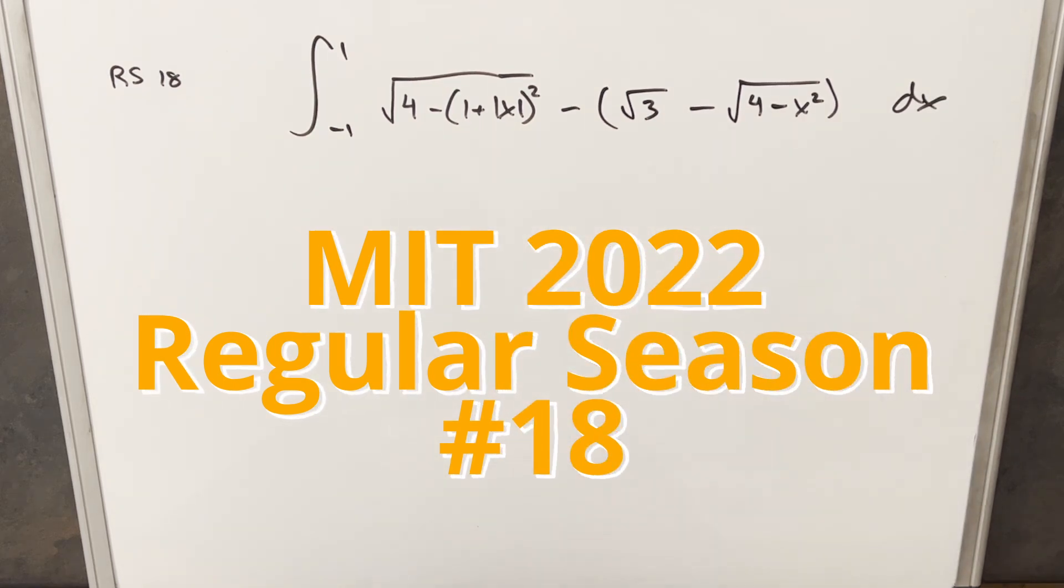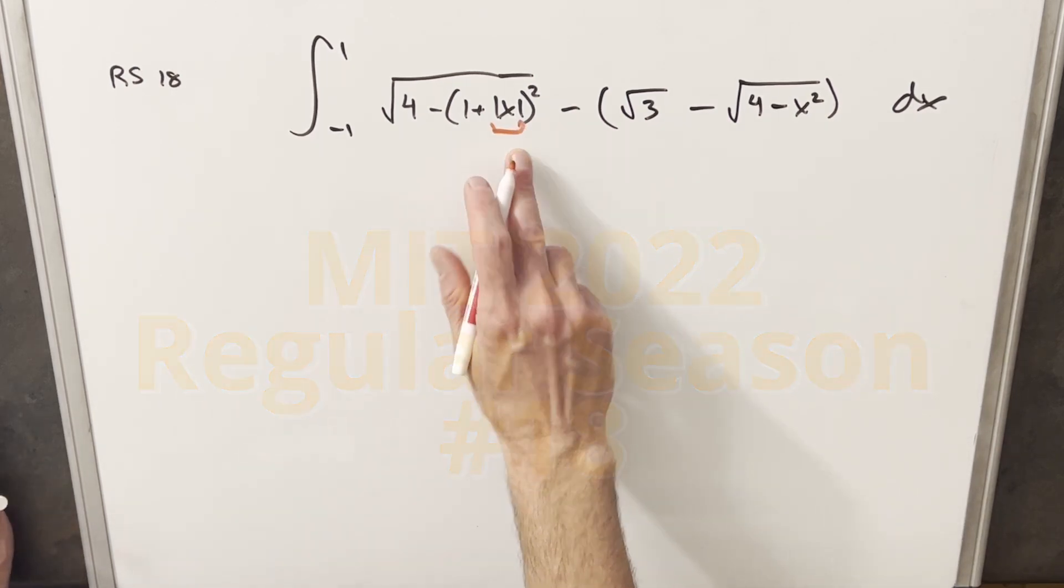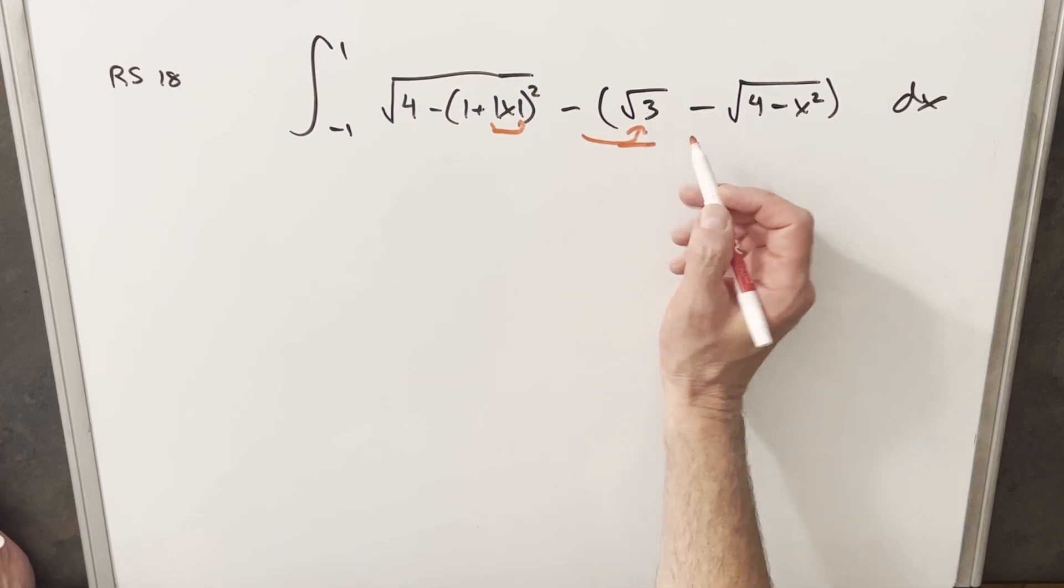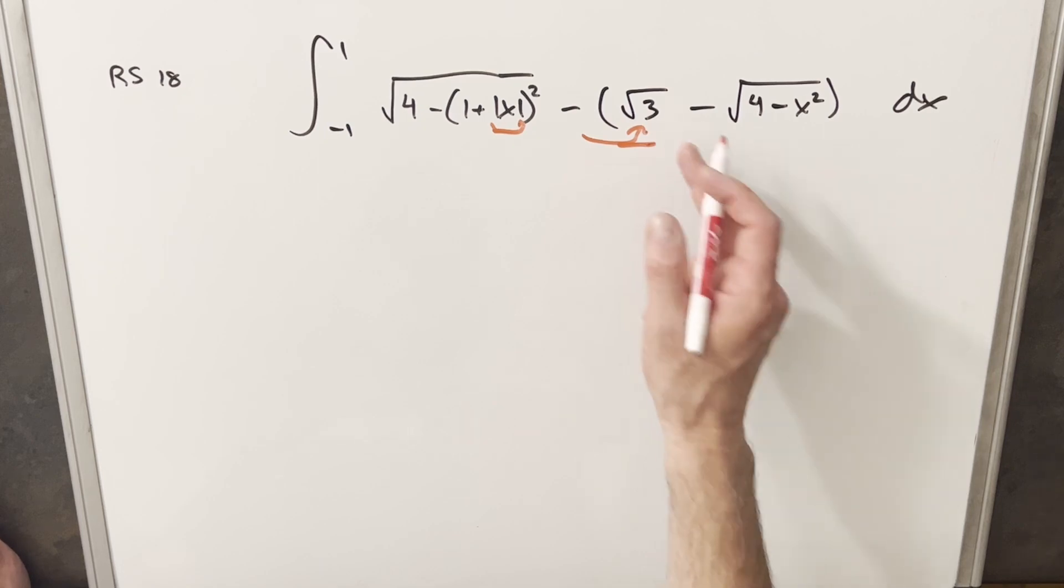We have this pretty complicated looking integral on the board with a lot of weird things going on. It's interesting that we have absolute value on the X. The other question I have is what is going on with this square root of three? I don't really understand why this square root of three is here.